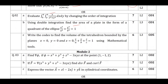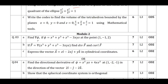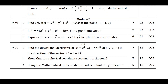Moving on to Module 2, which is vector calculus. If you study gradient, divergence, and curl, you can definitely score a minimum of 7 marks. They are also asking to find grad φ — given φ, find grad φ at a given point. If you study these two topics, you can score 14 marks in this module itself. So at a minimum, if you study how to find divergence, curl, and gradient, you can definitely score 7 marks.